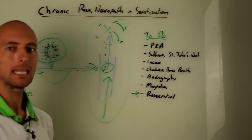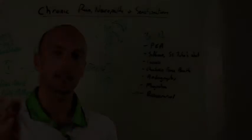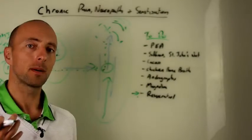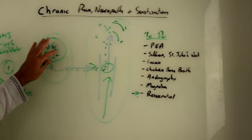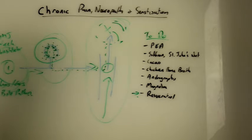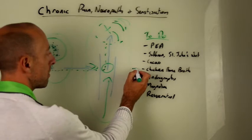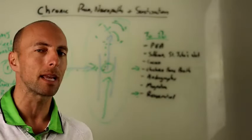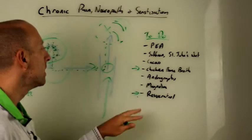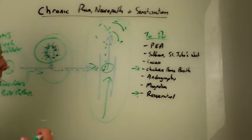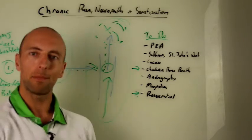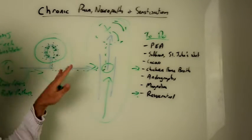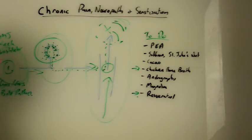The first one is resveratrol - a phytonutrient found in the skins of grapes, which gives red wine its fantastic properties. It does have some effect at reducing glial cell activation, works really well winding that down. The next one is chicken bone broth. The research on chicken bone broth is more aimed at migraine, but it's a very similar mechanism so we can extrapolate it out. We're talking about enriched chicken bone broth - not necessarily the stuff you make at home, but the powder stuff that's very highly concentrated. It seems to have an effect winding this down and works really well with migraines too.